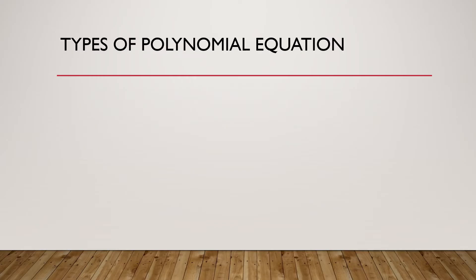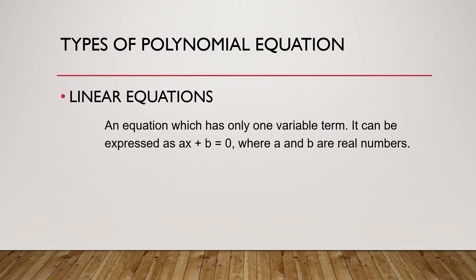There are different types of polynomial equations. We have a linear equation — it's an equation which has only one variable term. It can be expressed as ax plus b equals 0, where a and b are real numbers. For example, 2x plus 1 equals 0.